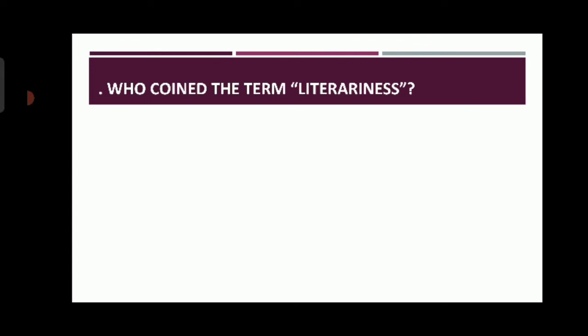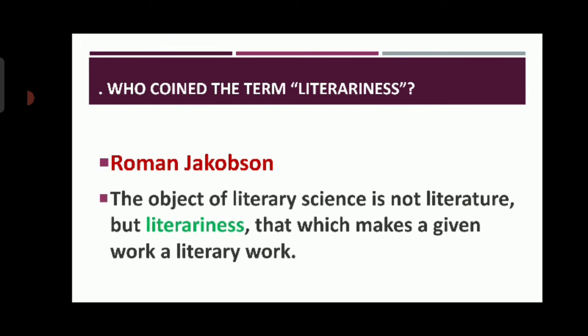The next question: who coined the term 'literariness'? It was first coined by Roman Jakobson. According to him, the object of literary science is not literature but literariness — that which makes a given work a literary work. The source of literariness is neither the author, context, theme, nor the subject; rather, the source of literariness is language. Literary language is totally different from non-literary language, such as that used by journalists, lawyers, or in letter writing.